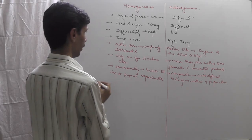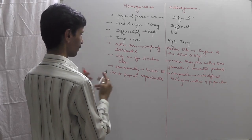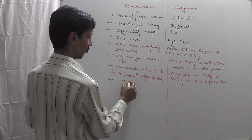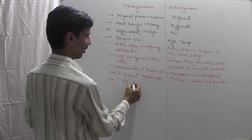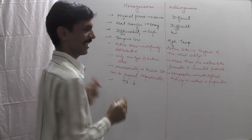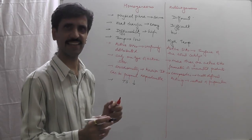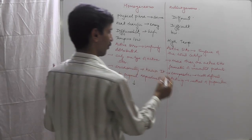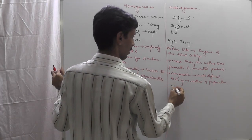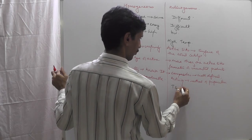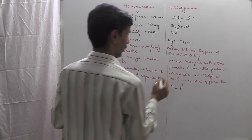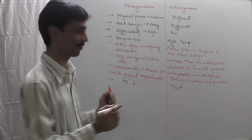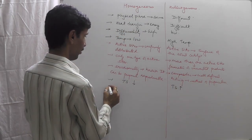The eighth point is thermal stability. In homogeneous catalysis, thermal stability — the ability to withstand heat — is relatively lower. In heterogeneous catalysis, thermal stability is comparatively high.